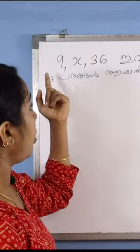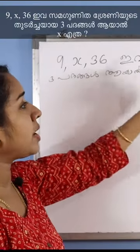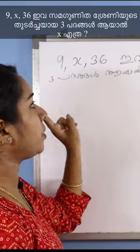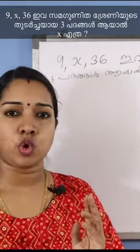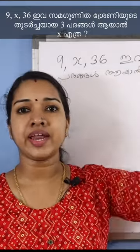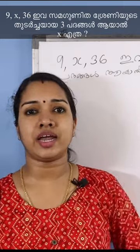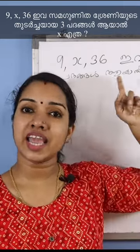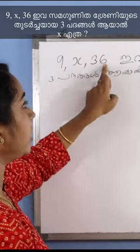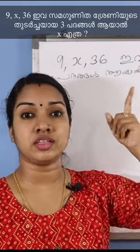First question: 9×36 is the same thing as 3×36. This is the same thing that we have to do with arithmetic progression.